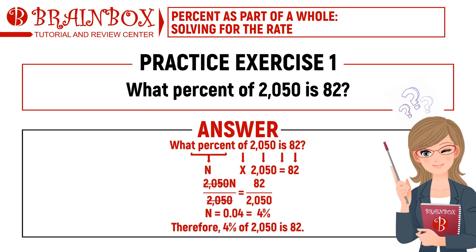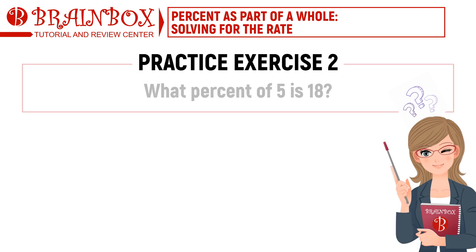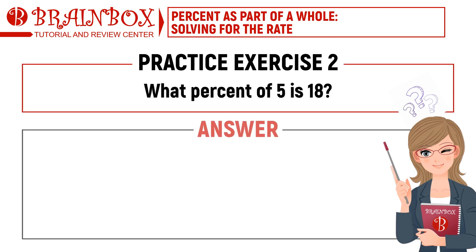Time is up. The correct answer is 4%. The mathematical equation is N times 2,050 equals 82. Isolate N by dividing both sides by 2,050, giving N equals 0.04. Converting to percent form, N equals 4%. So 4% of 2,050 is 82. Number two: What percent of 5 is 18? Timer starts now.